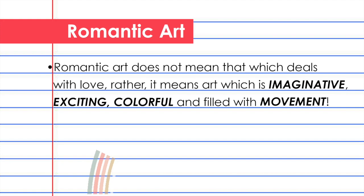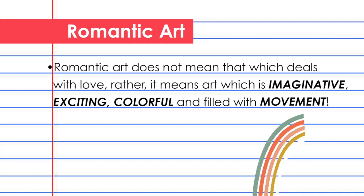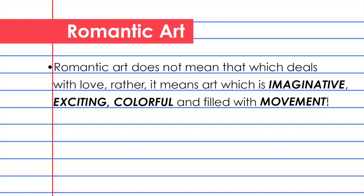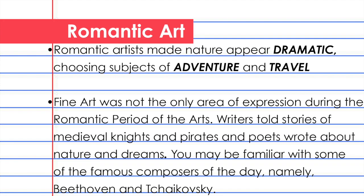If you're going to participate in this, give me a like and subscribe to my channel. Romantic art does not mean that which deals with love; rather, it means art which is imaginative, exciting, colorful, and filled with movement. As we advance in this study, try and keep these four bold words in mind as characteristics of the Romantic period.